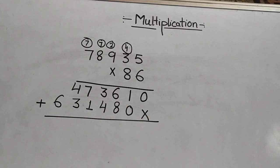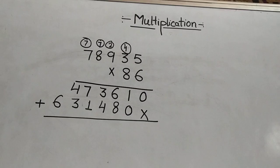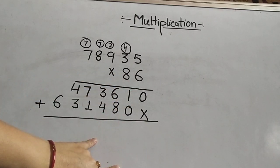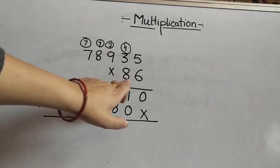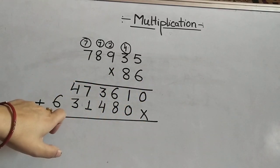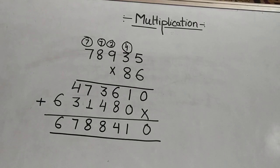Children, keep in mind that your digits are in proper places — the ones digit should be below the ones digit and the tens digit should be below the tens digit — so that you can add these digits properly without any difficulty. After multiplying by these 2 digits, we will add these 2 lines. So the answer is 67,88,410.